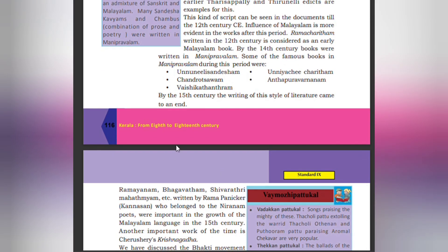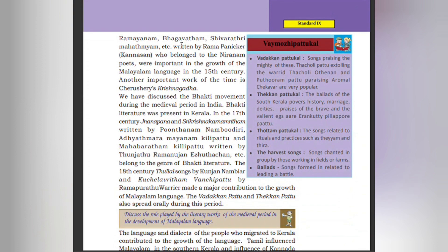By the 15th century, the writing of Manipravalam style literature came to an end. Ramayanam, Bhagavatam, and Shivratri Mahatmyam written by the Niranam poets — Rama Panikkar and Kannassan — were important in the growth of the Malayalam language in the 15th century. The important work of the time is Cheeraman's Krishna Gatha. Vadakkan Pattu (ballads of northern Kerala) — such as songs praising the mighty Tacholi, the Puthuran Pattu praising Aromal Chekavar — are very popular. Thekkan Pattu (ballads of southern Kerala) includes history, marriage, deities, and praises of the brave. Songs related to rituals and practices such as Theyyam and Thira, harvest songs, songs chanted in groups by those working in fields, and ballads related to leading battles were also prevalent.